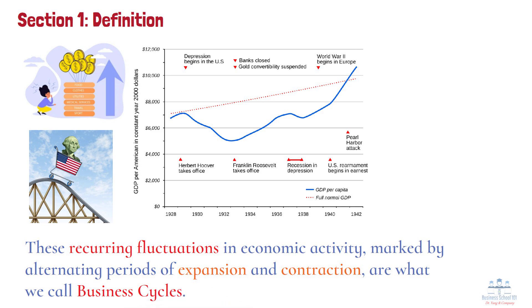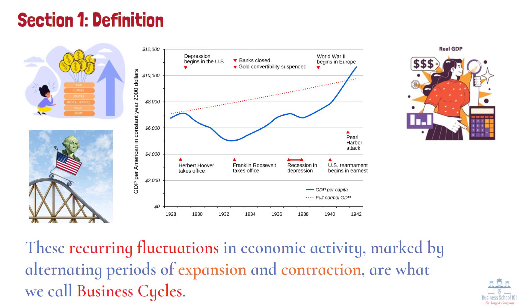We track these cycles using real GDP, which is our best measure of overall economic activity. By observing changes in real GDP over time, we can identify the four distinct phases of a business cycle. Let's break them down step by step so you can see how the economy moves through these phases.